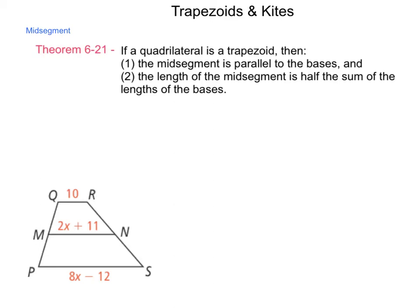Using information from Theorem 621, let's find the value of x in this figure, and the length of each of the two bases and the midsegment. We know that MN equals (QR plus PS) divided by 2 — that's what Theorem 621 part 2 tells us.